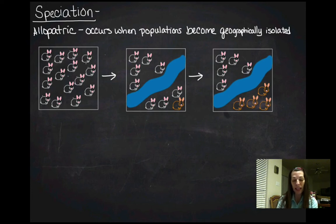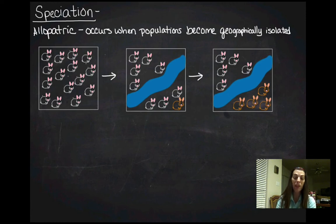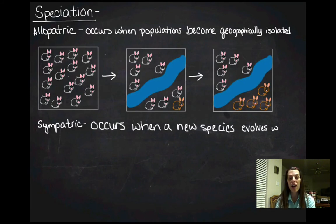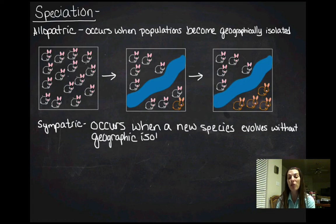That first form — allopatric — involves geographic isolation, like a river. The second form is called sympatric speciation, and it occurs when a new species evolves within a population without any geographical isolation.